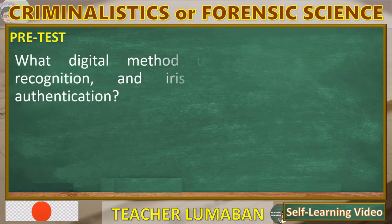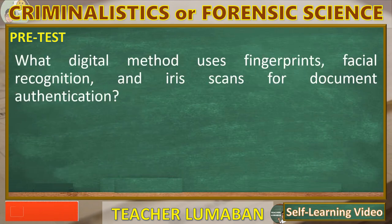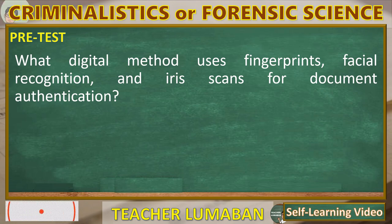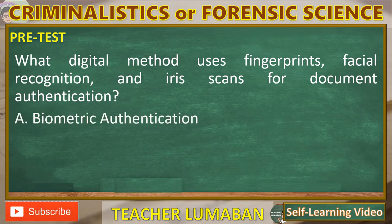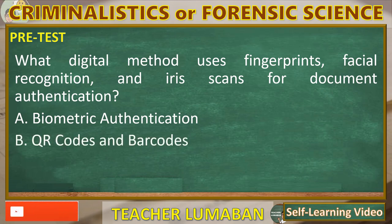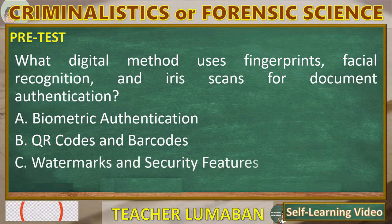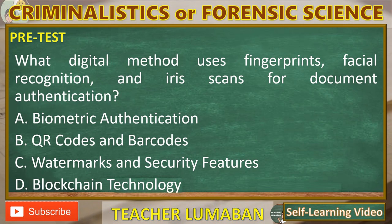What digital method uses fingerprints, facial recognition, and iris scans for document authentication? A. Biometric authentication. B. QR codes and barcodes. C. Watermarks and security features. D. Blockchain technology.